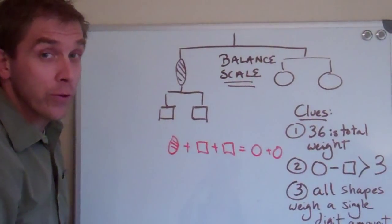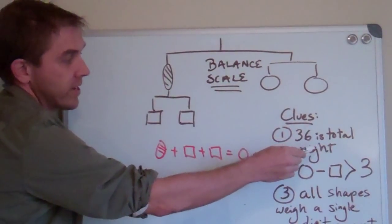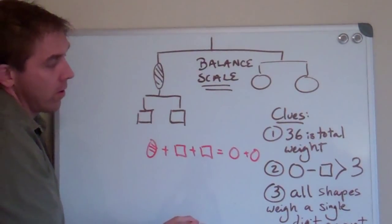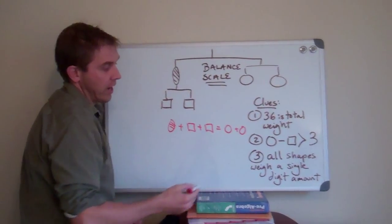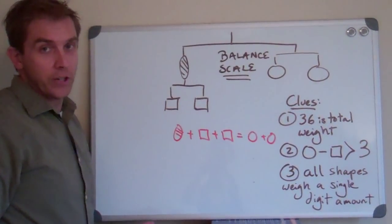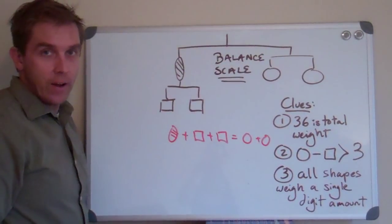You're also given clues for every puzzle. Thirty-six is the total weight. Circle minus the square is greater than three, and all shapes weigh a single digit amount. Your job is to find out what each was.